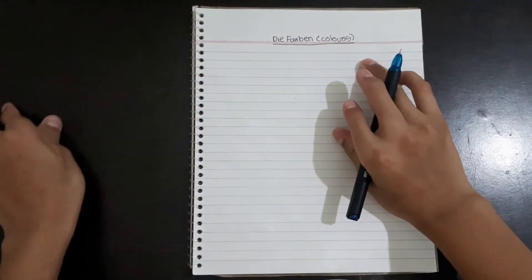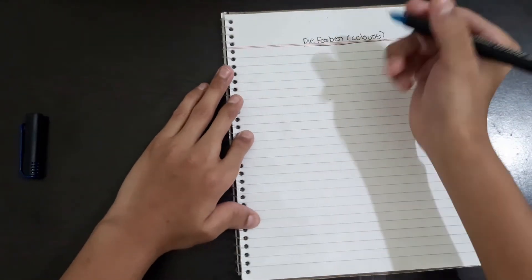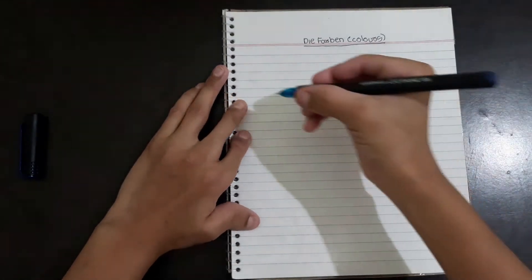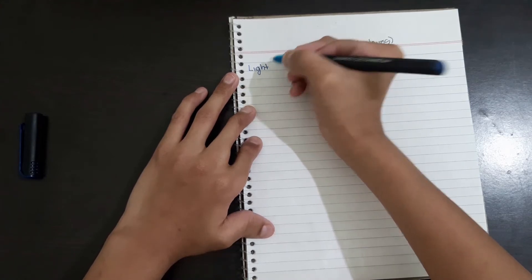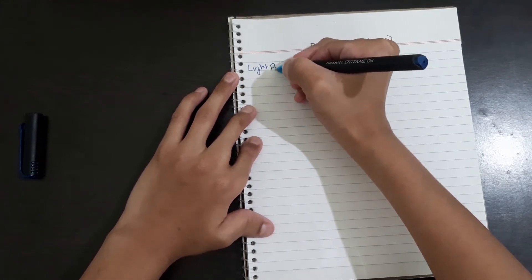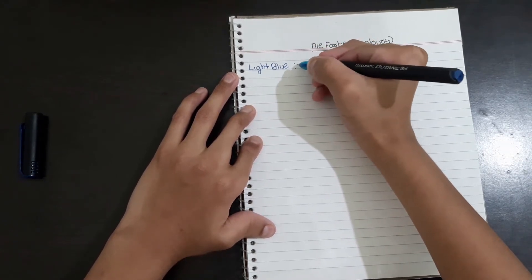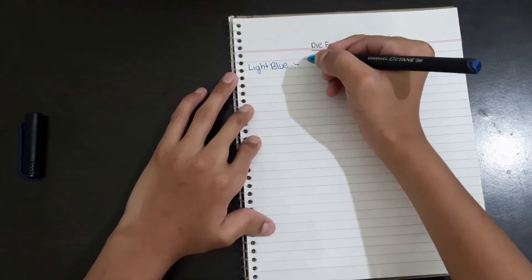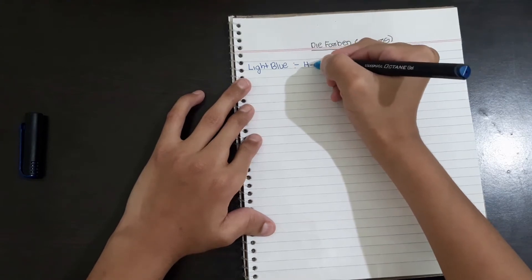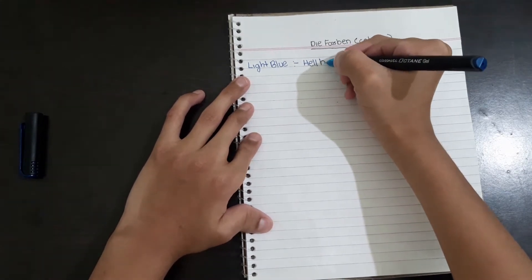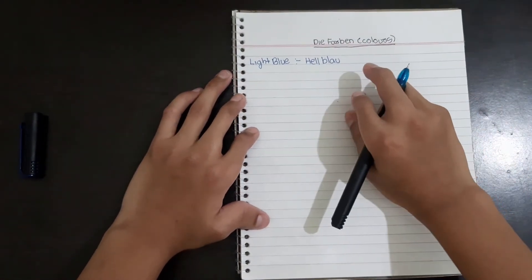So the first one is light blue, which means Hellblau. Hell means light, Blau means blue.